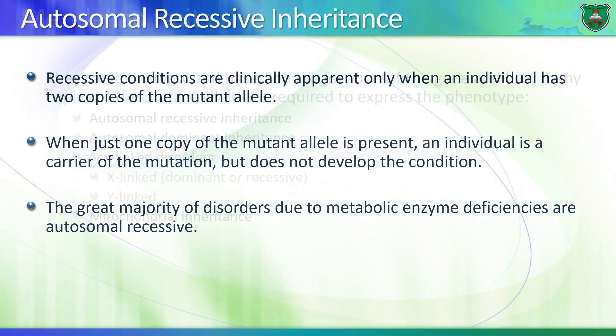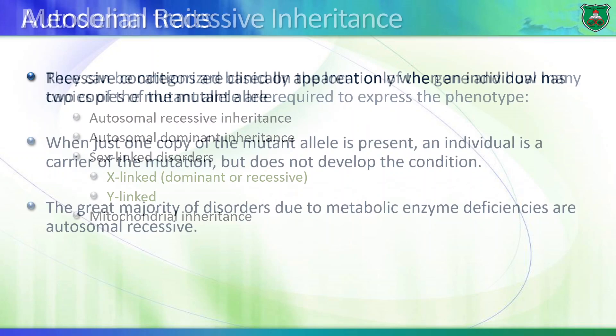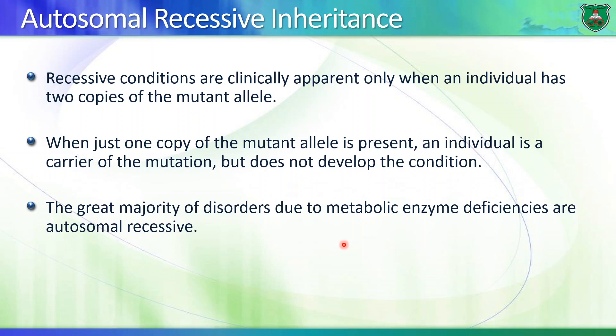There are different patterns for Mendelian inheritance: autosomal recessive, autosomal dominant, X-linked (which can be dominant or recessive), Y-linked, and mitochondrial. Recessive autosomal disorders are not clinically apparent unless the person has two mutant or defective alleles. If only one allele is mutated, the person is still normal with no symptoms but is considered a carrier.